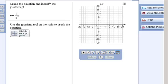In this Math Excel exercise, you're asked to graph the equation and identify the y-intercept. The equation is y equals 1 quarter x. We know that this is a linear equation because there are no exponents on the x and the y.